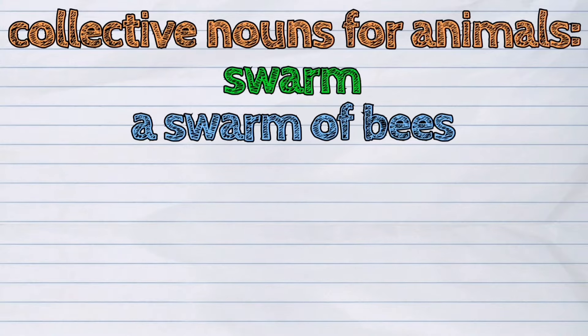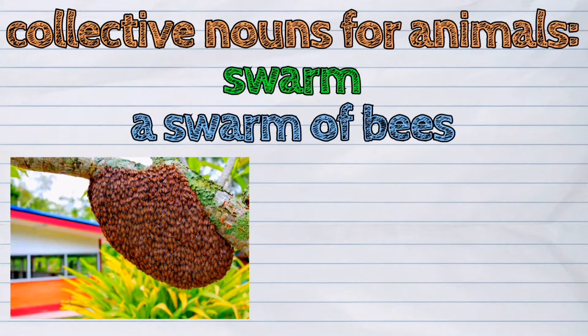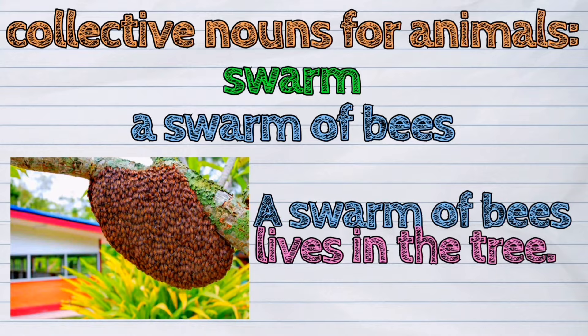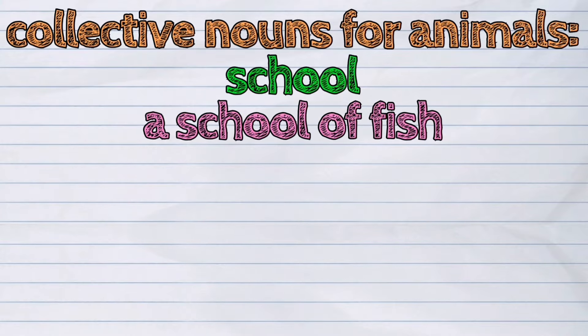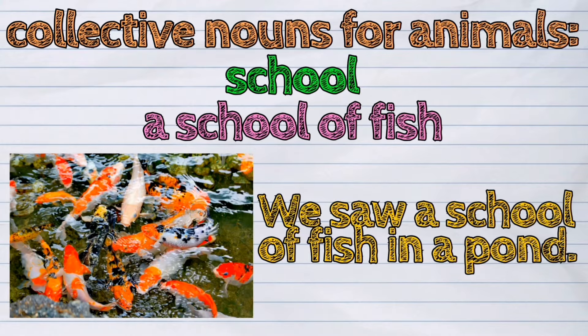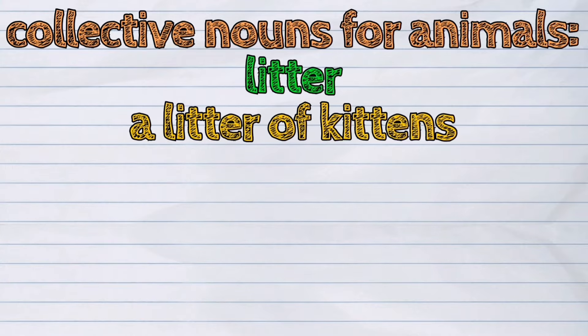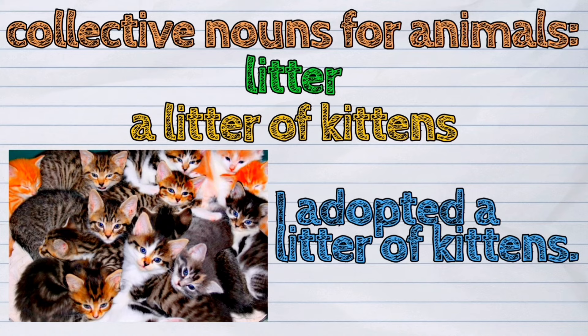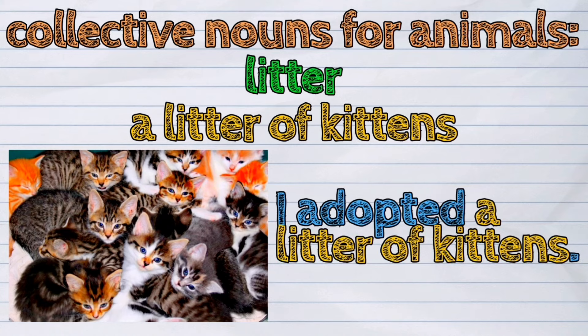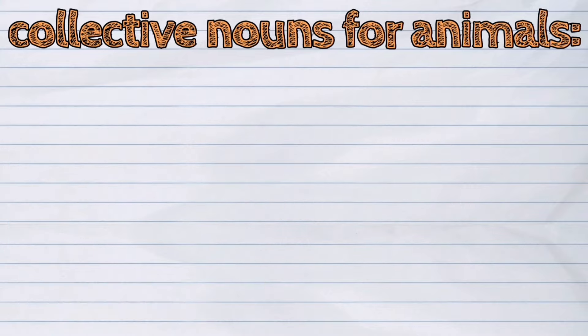Swarm — a swarm of bees. A swarm of bees lives in the tree. School — a school of fish. We saw a school of fish in a pond. Litter — a litter of kittens. I adopted a litter of kittens.